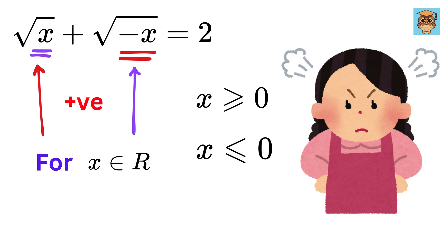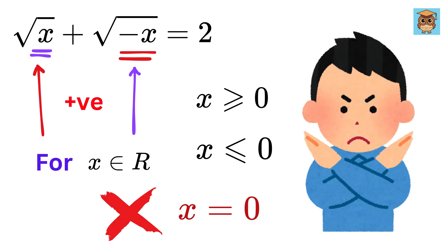What is this nonsense? This leaves us with only one possible value of x, which is x equals 0. But clearly, x equals 0 does not satisfy this equation. So no real solution exists for x.